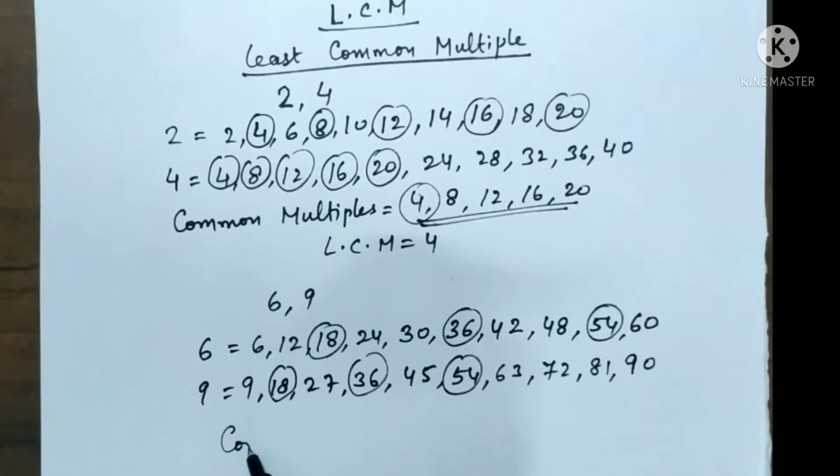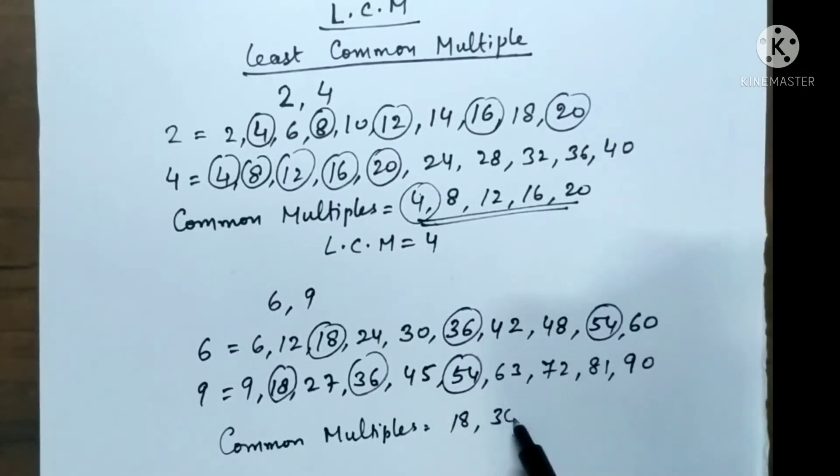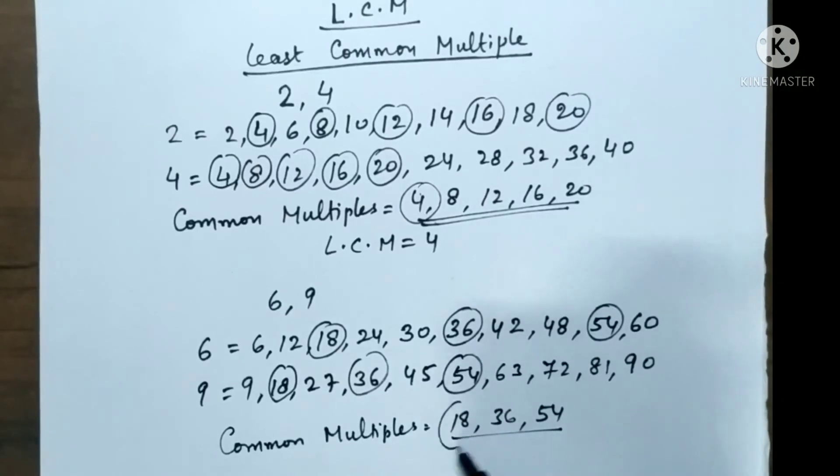Again we will write down, first the common multiples, so they are 18, 36 and 54. Now out of these which is the smallest one? 18. So the LCM is 18.